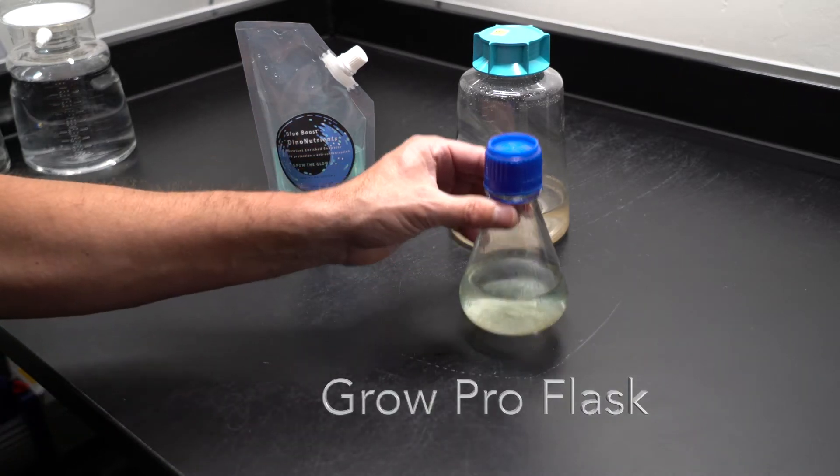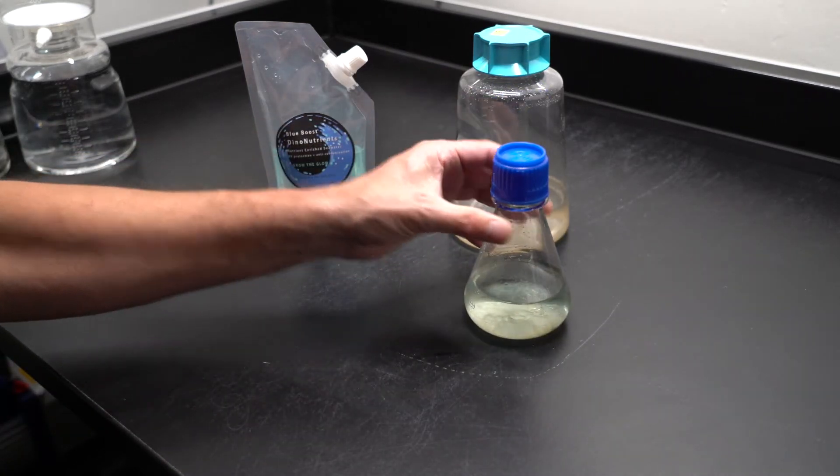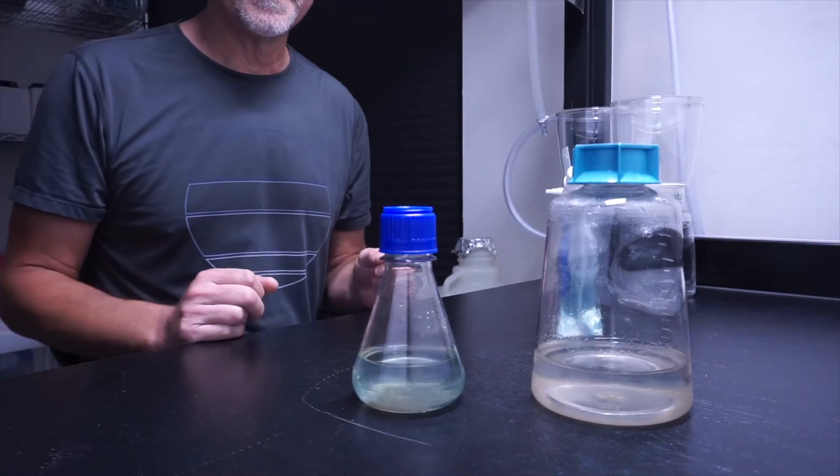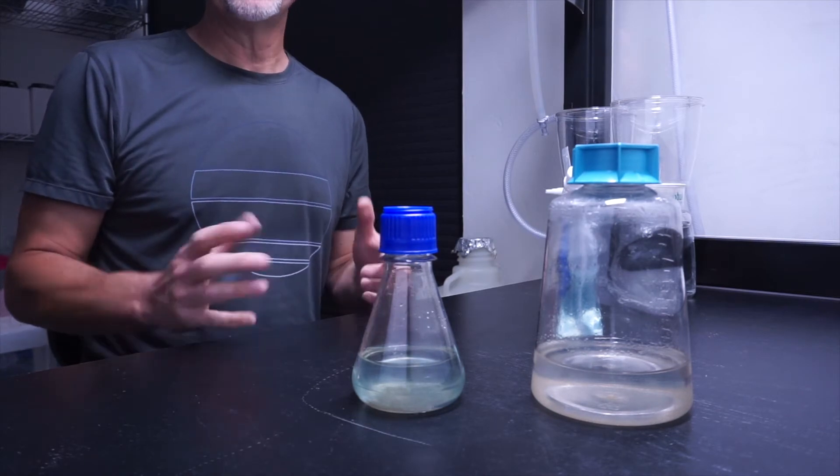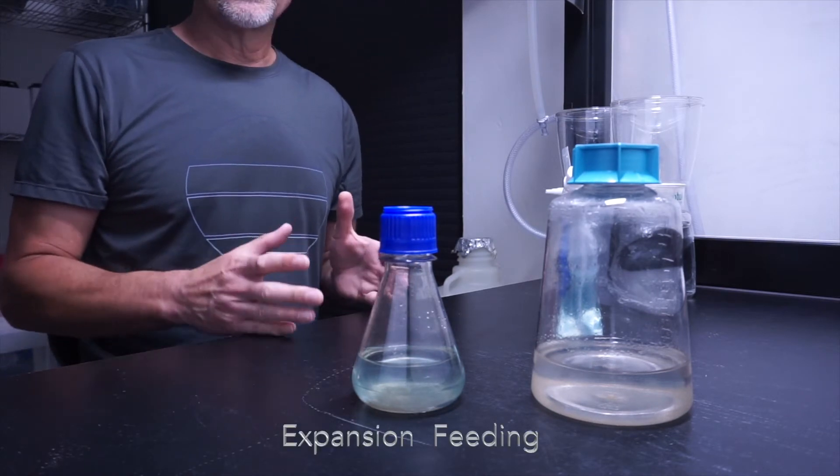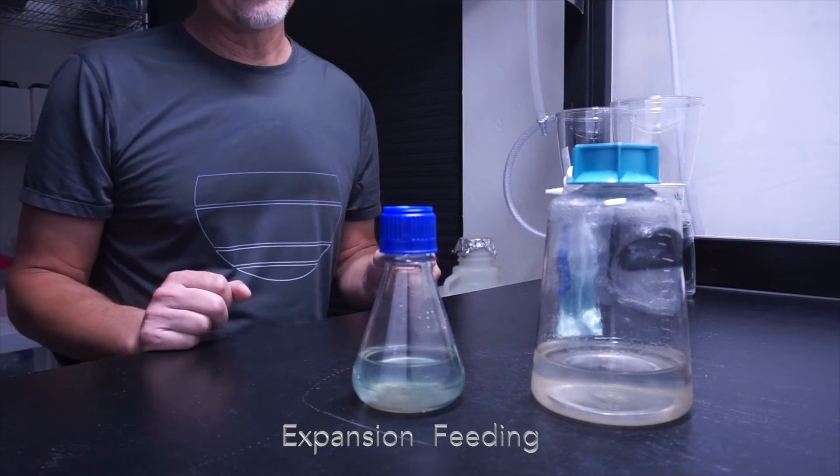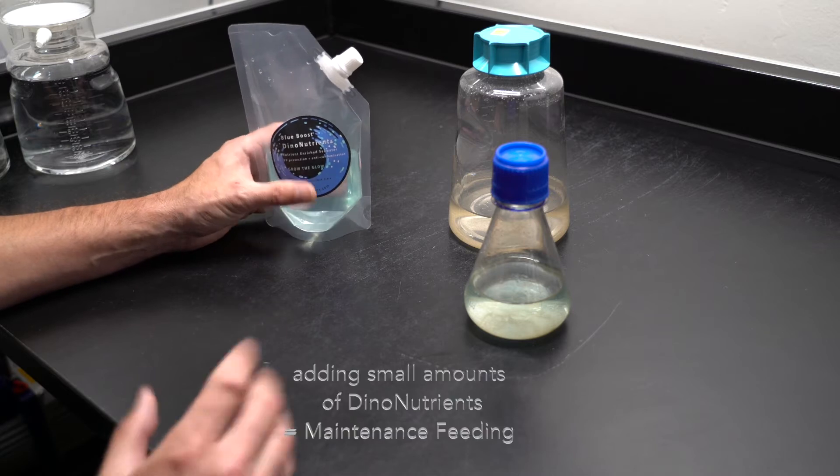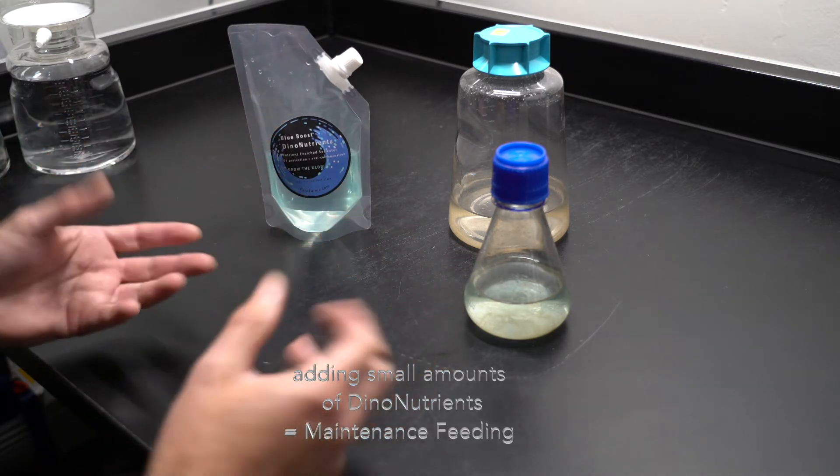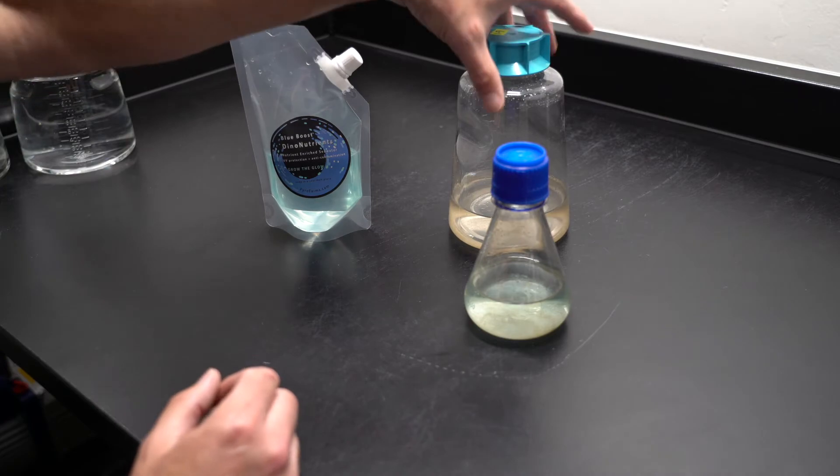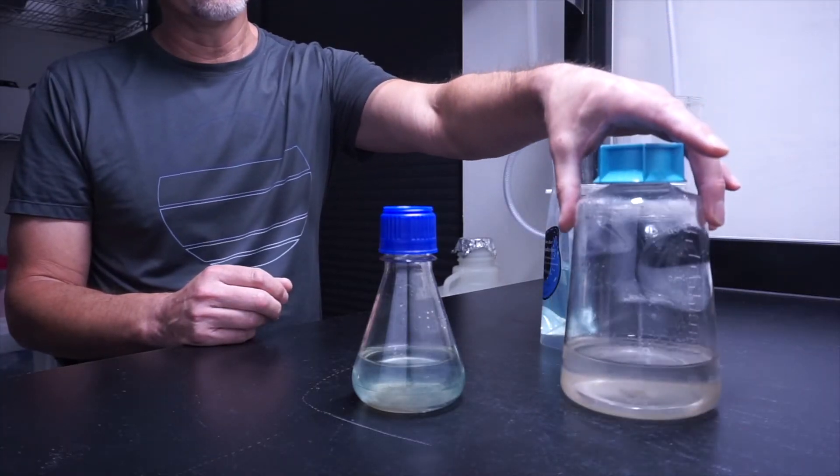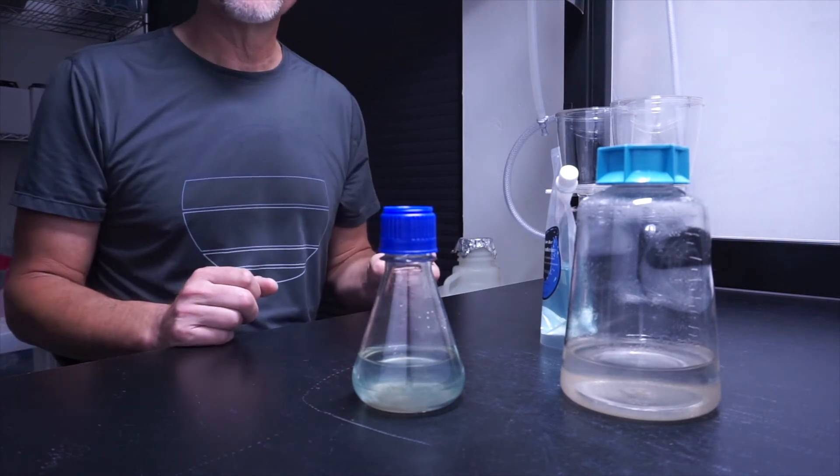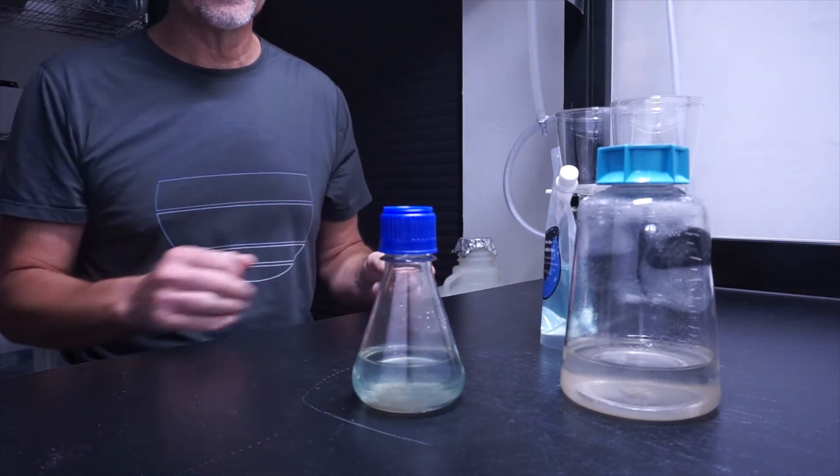The density doesn't look as dense during nighttime and it's nighttime hours right now. We're filming at night because we're going to do a nighttime feeding of the GrowPro flask. We're going to feed for what's called expansion feeding. There's two types of feedings: you can feed small amounts of dino nutrients or Blue Boost dino nutrients to just maintain the culture, or if you're trying to grow into a bigger culture or container, there's expansion feeding. Tonight we're going to do some expansion feeding using the GrowPro flask.